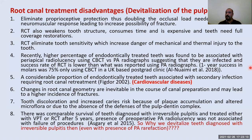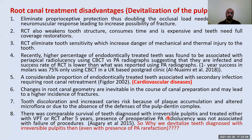This study assessed VPT treatment and RCT treatment in two groups of patients with irreversible pulpitis. After five years, there was no difference in survival of teeth with VPT and RCT, which is interesting. The presence of a preoperative periapical lesion was not associated with failure, so whether there is a periapical lesion or not, the success rate was comparable between the two procedures. So why do we devitalize teeth diagnosed with irreversible pulpitis even with periapical rarefaction?